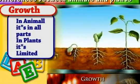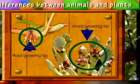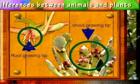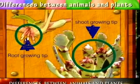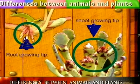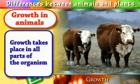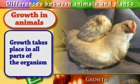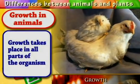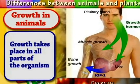One of the differences we are going to look at is growth. Growth in plants is distributed or concentrated at particular spots — at the tip of the stem and the tip of the roots. Whereas if you look at animals, you'll find that growth takes place in all parts of the body.